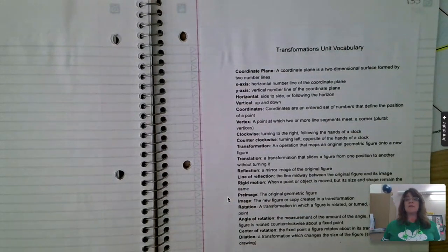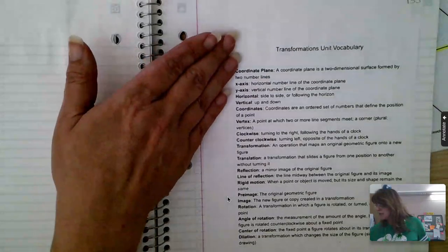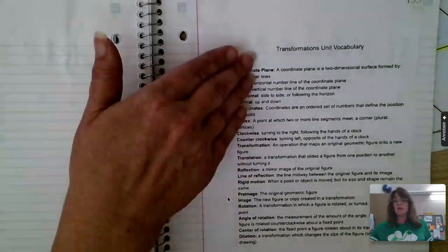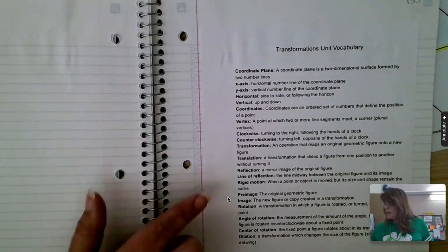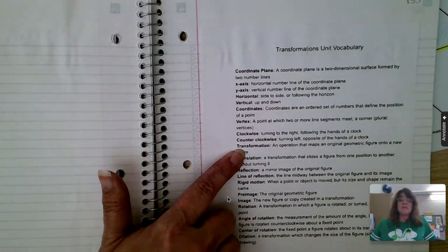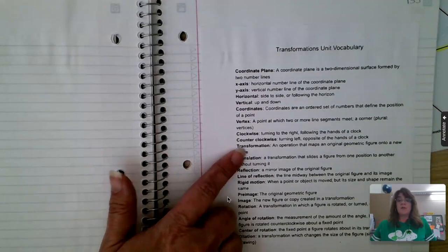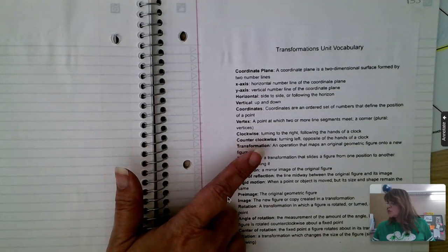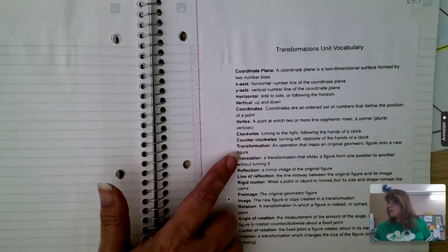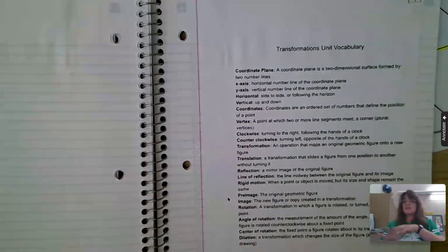You can see that transformations has a vocabulary page. That's the first page you're going to put in. Right here is the definition of transformations, the definition for our whole unit. An operation that maps an original geometric figure onto a new figure. We're moving stuff around.